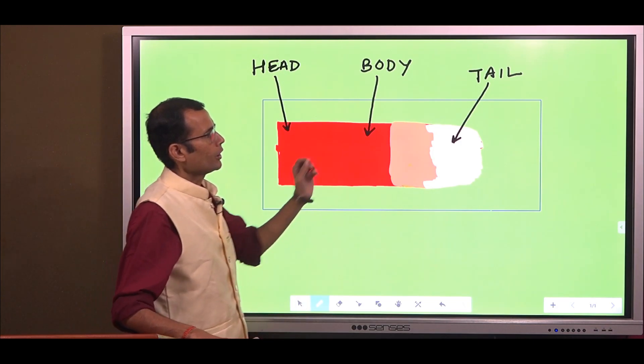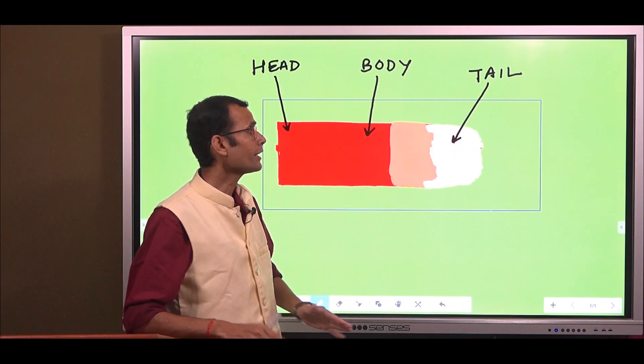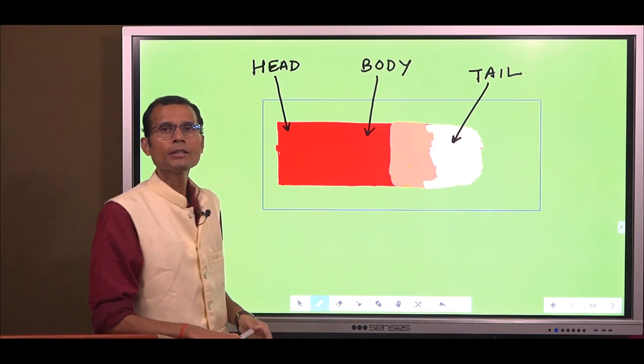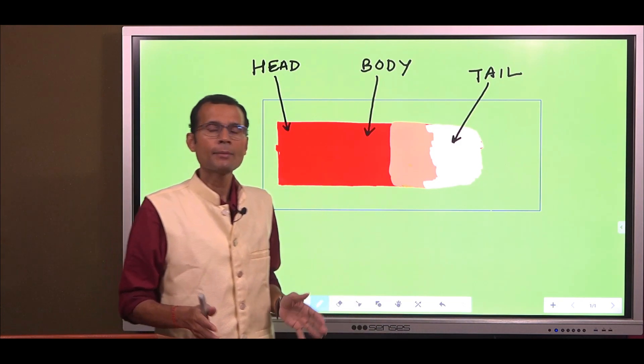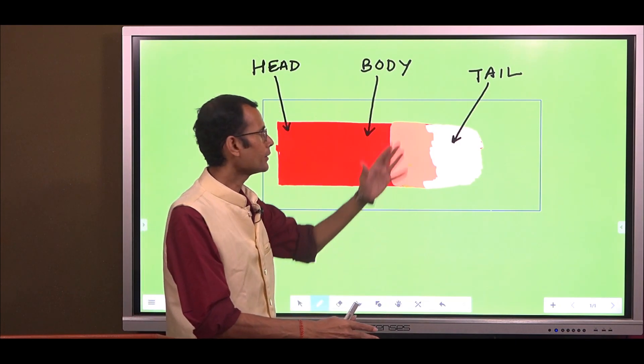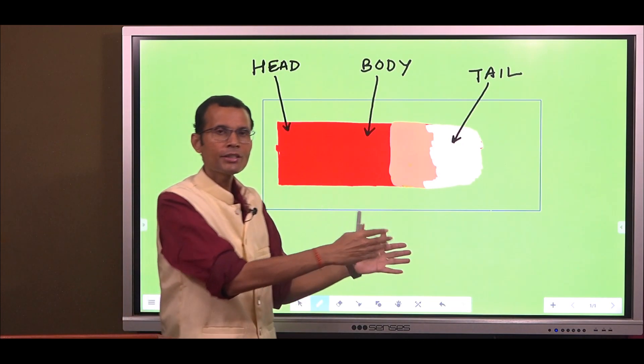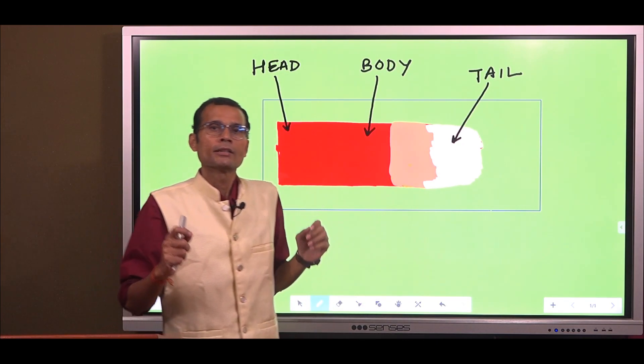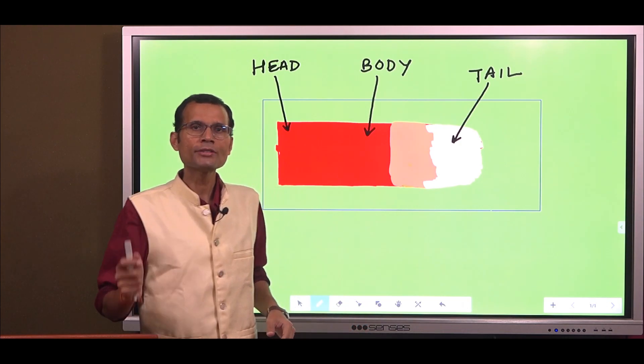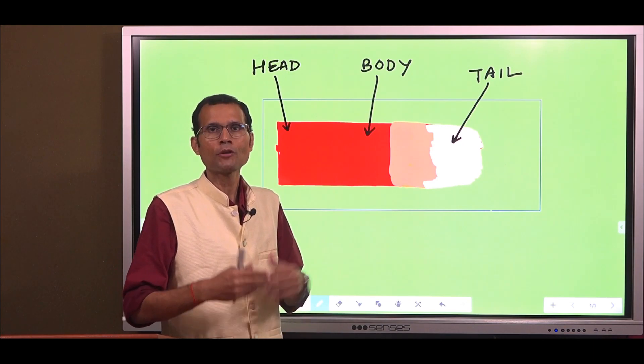So neutrophil and monocyte mainly predominantly in the tail region, then body region mainly the lymphocytes, and I'm saying predominantly these cells are found in those particular regions. The remaining cells toward the head region. The next question is why is it so? Why do you see such an uneven distribution or non-uniform distribution of cells?